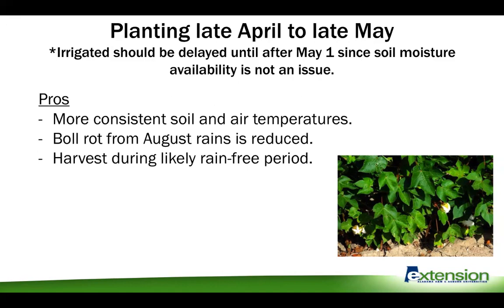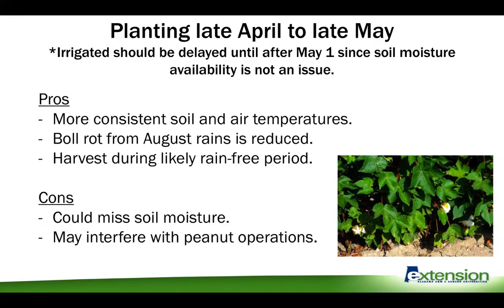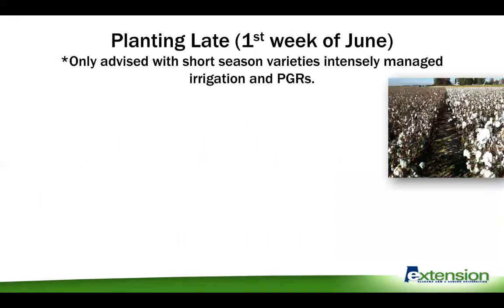Delaying planting to this window puts your harvest timeline into hopefully a rain-free period during September, October, and November. Some cons are that you could miss some early season soil moisture if you're on dryland acreage, and if you have a large peanut operation, that could interfere with some of the planting and harvest times.